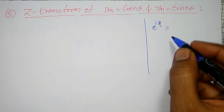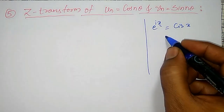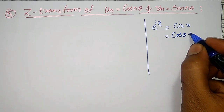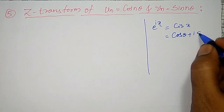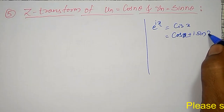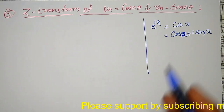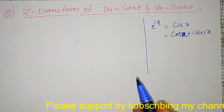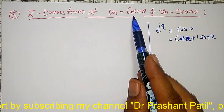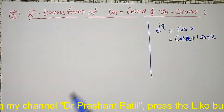e raised to ix, I can write it as cos(x) plus i·sin(x). Using this property, I can derive the Z transform of cos(nθ) and sin(nθ) here.